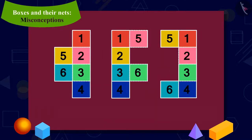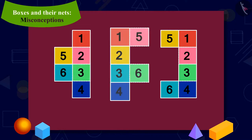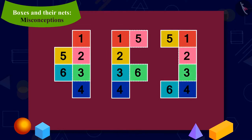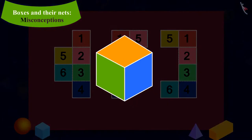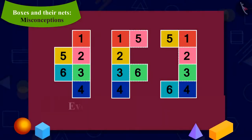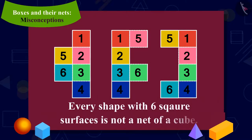Yes, kids, it is possible to have more such nets which have six square surfaces, but by folding them, we cannot make a cube. In other words, every shape with six square faces is not a net of a cube.